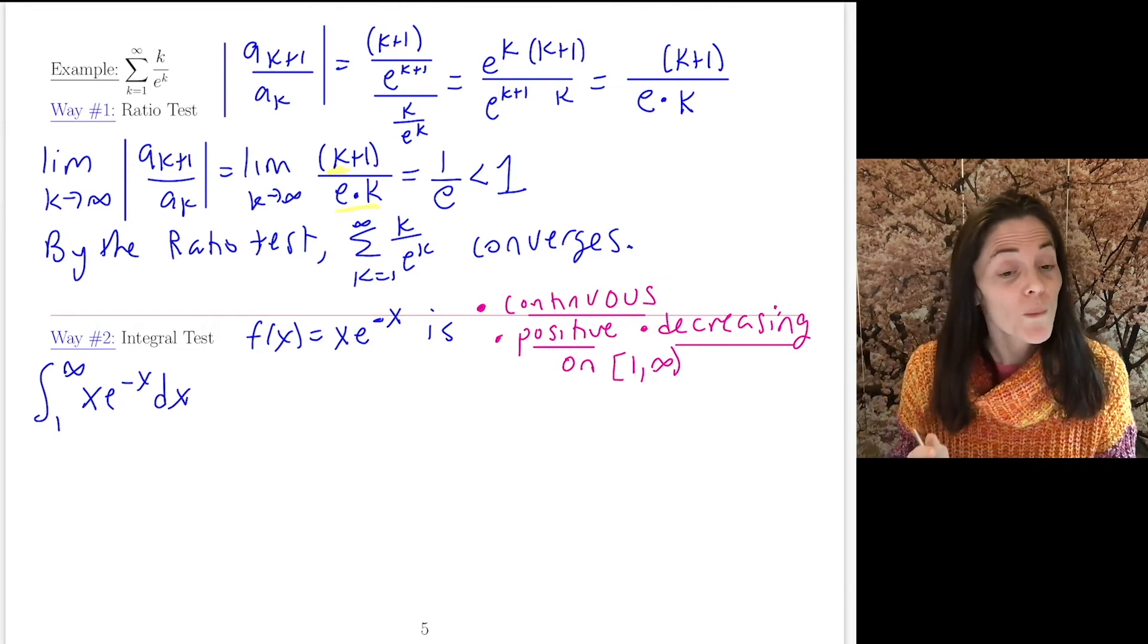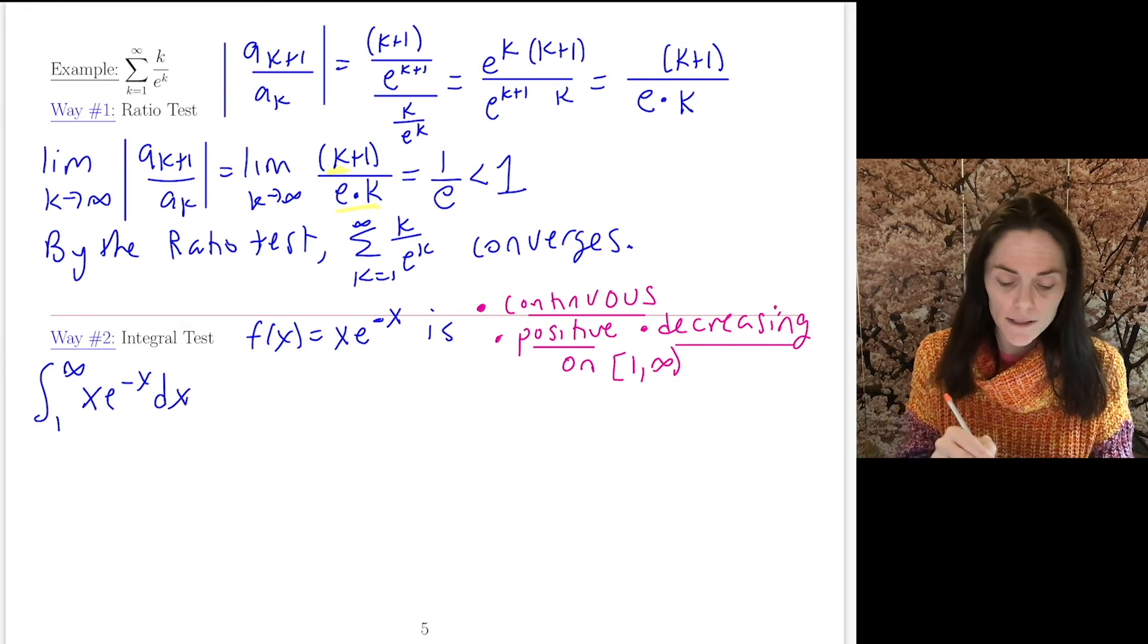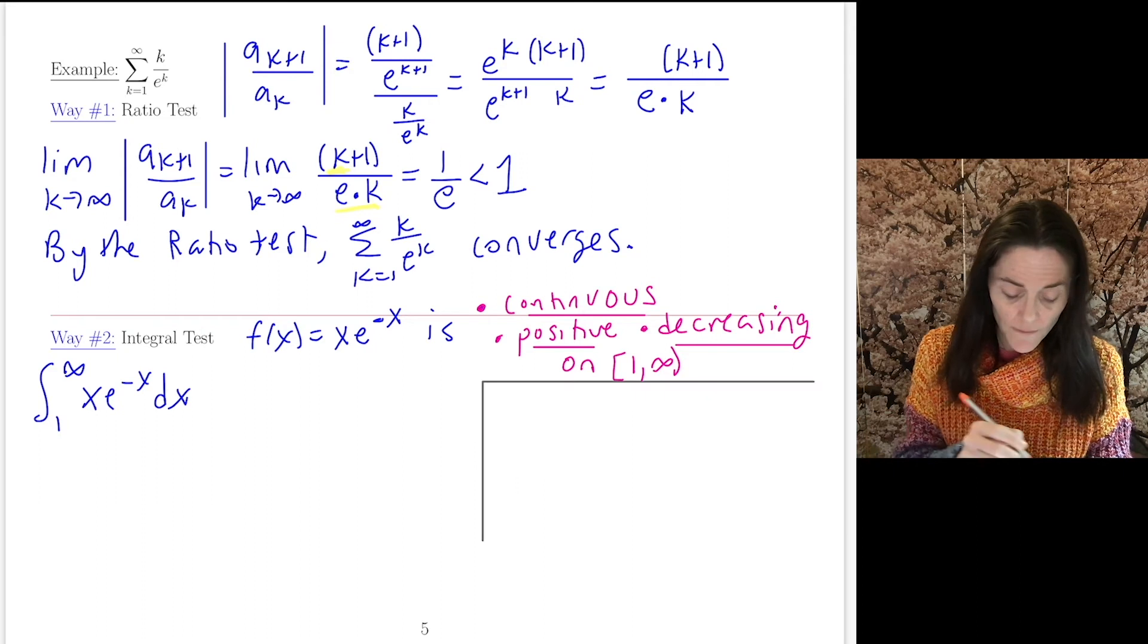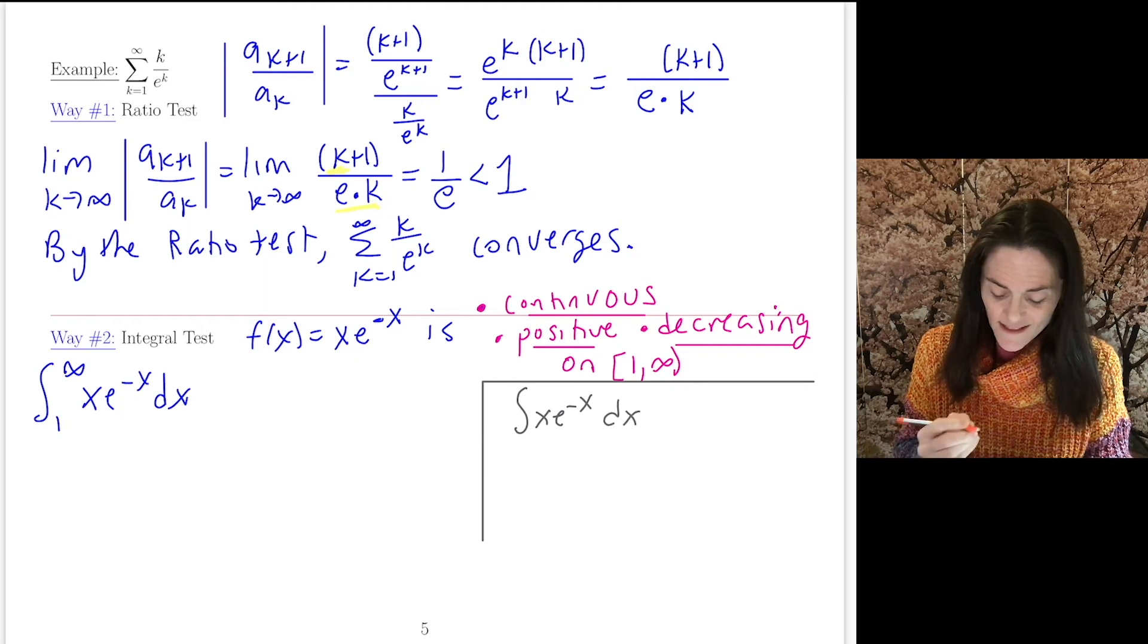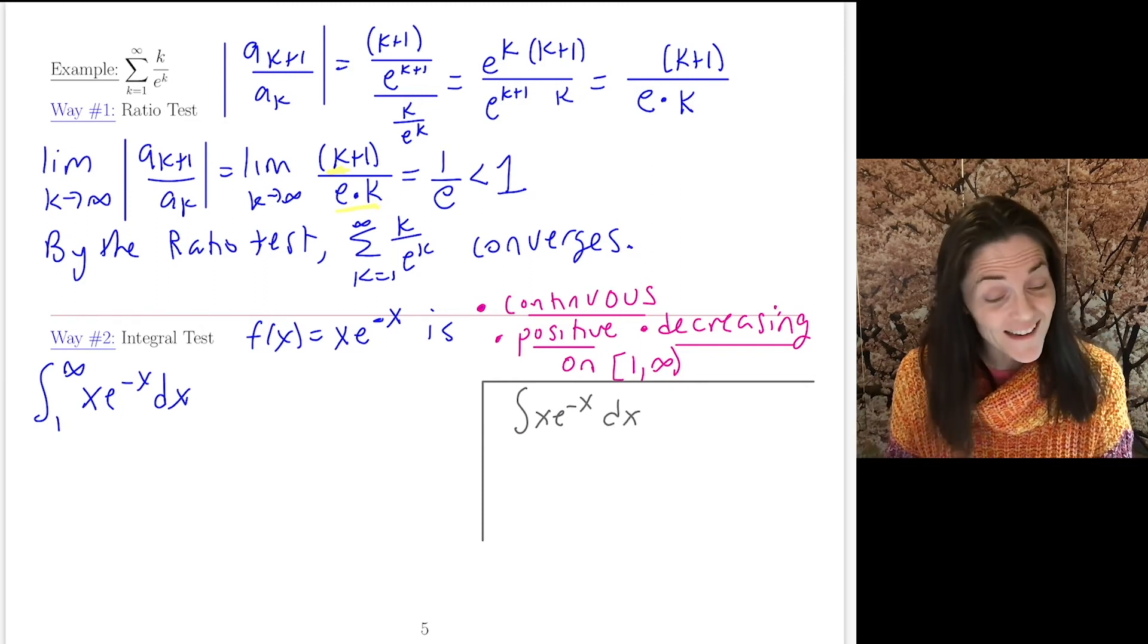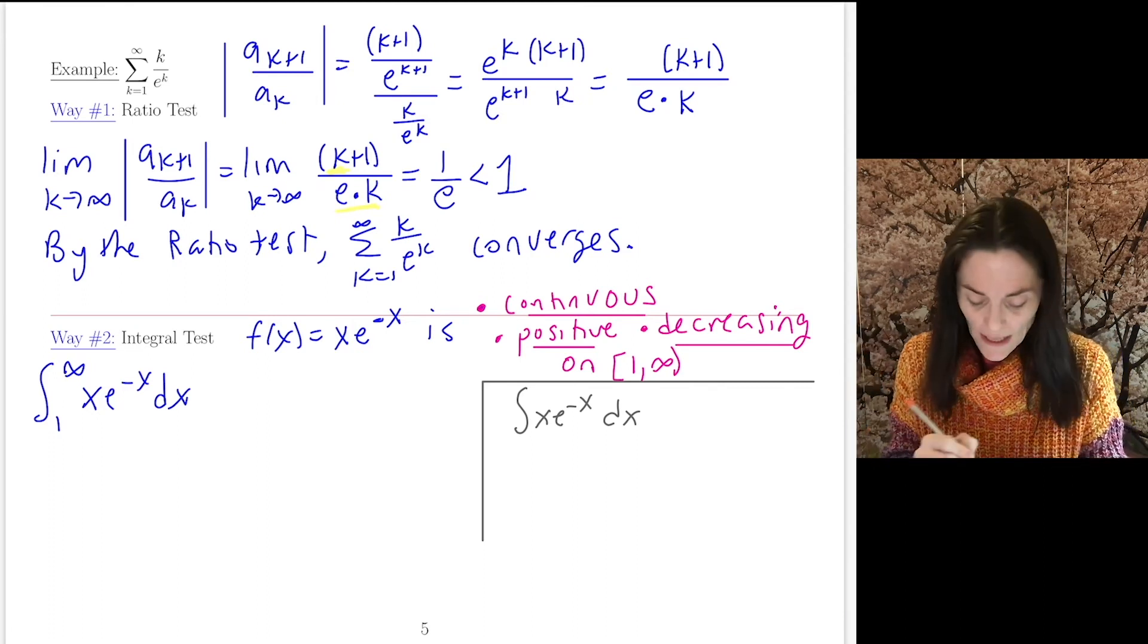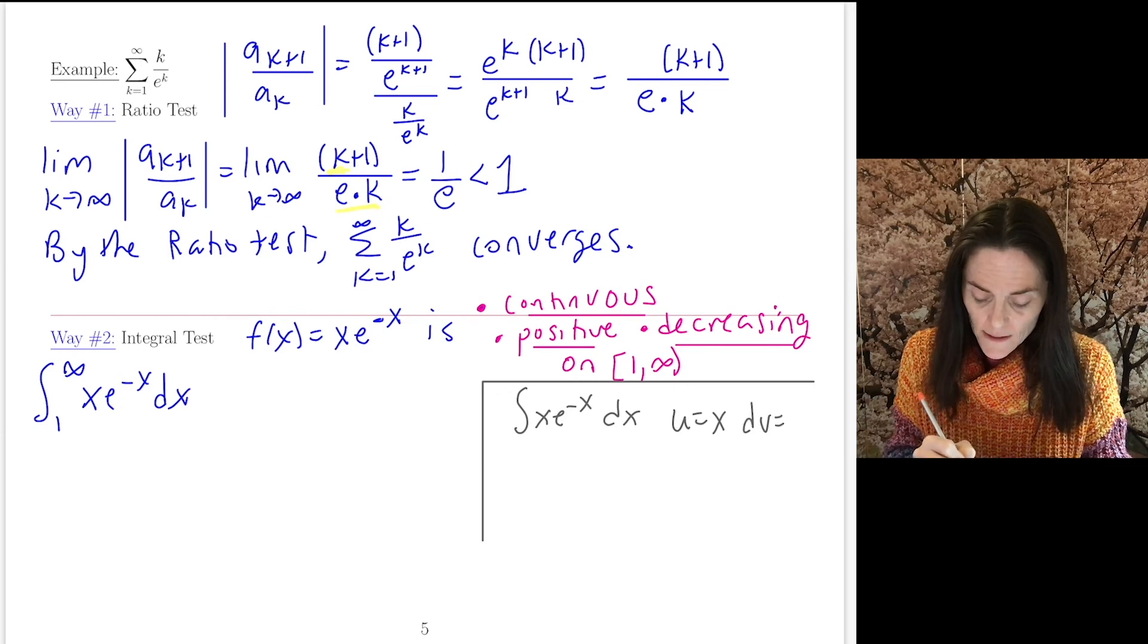When we integrate this function, though, this is integration by parts. So I'm going to come to the side and find an anti-derivative. I will just do this. x·e^(-x) dx. This is integration by parts. And if you follow Liate, we have algebraic. So u is x.